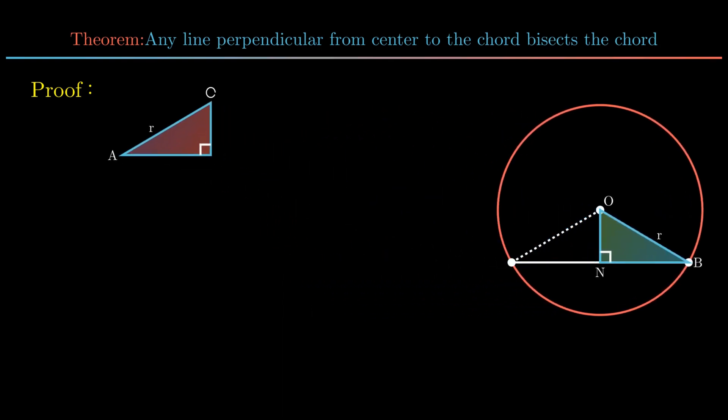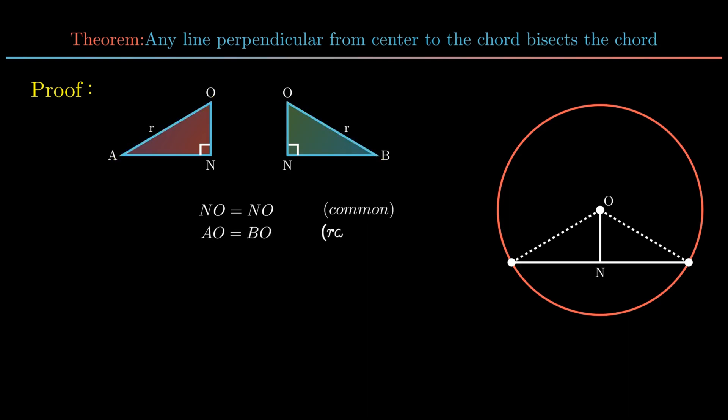Triangle ONA and triangle ONB can be proved congruent as side NO is common to both the triangles. Side AO is equal to side BO, each radius. Angle ANO is equal to angle BNO, each 90 degrees.